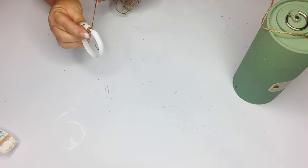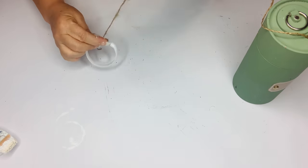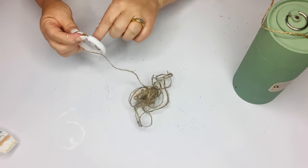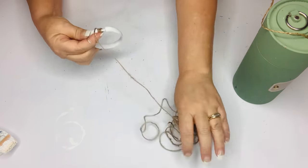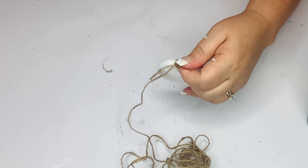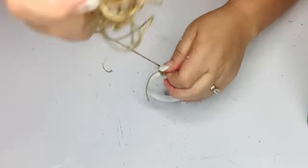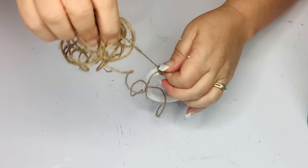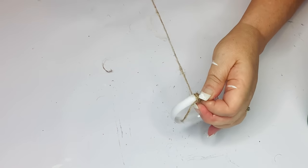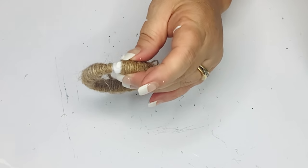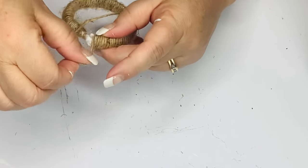Now I'm going to take some jute twine and start wrapping it around my shower curtain ring, starting at one end and going all the way to the other. You can use hot glue to get it started, then wrap it really quickly. I want to leave that opening open so I can put it into the top of my cloche once I get to that point.